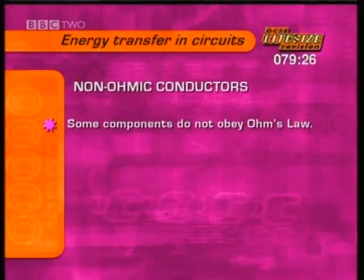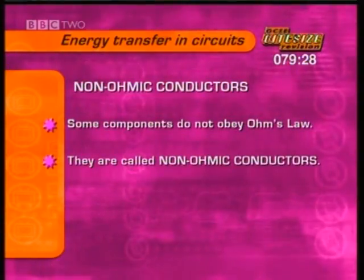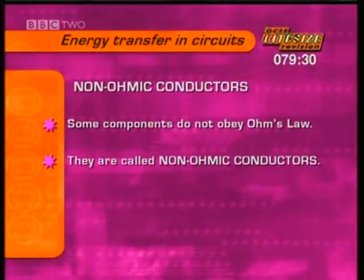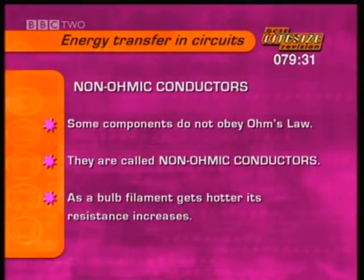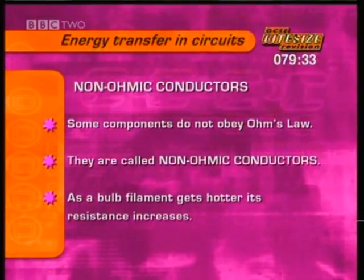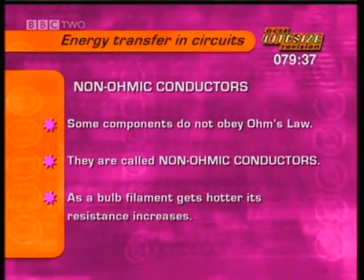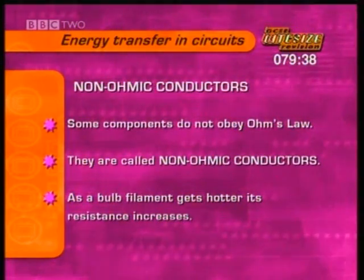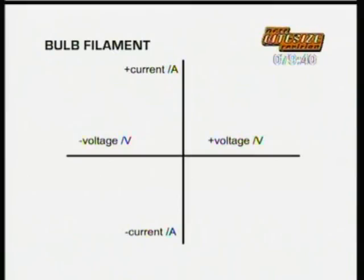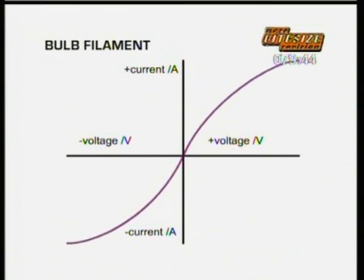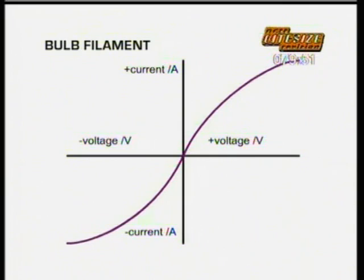Some components do not obey Ohm's law — they're called non-ohmic conductors. A bulb filament is a non-ohmic conductor. As the voltage across a bulb filament increases, it gets hotter and its resistance increases. A current-voltage graph for a bulb filament curves downwards as the voltage increases, because the resistance is increasing and reducing the rate of increase of the current.